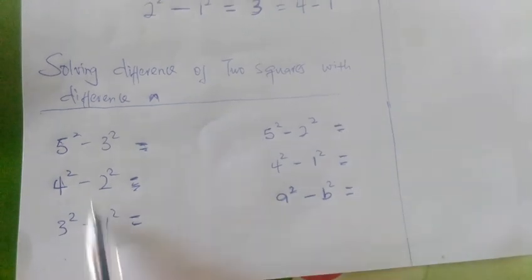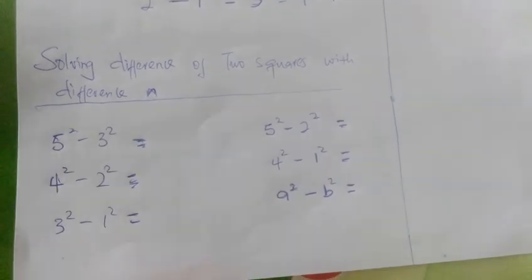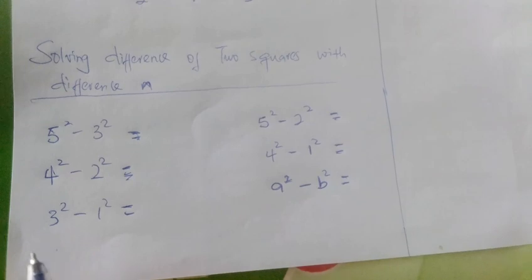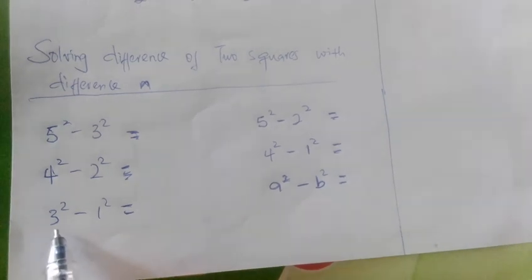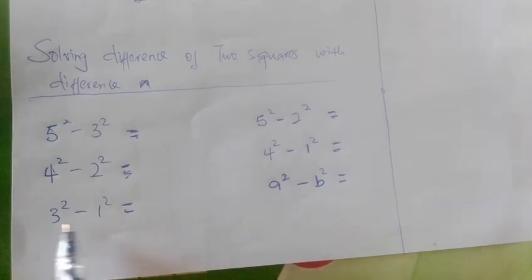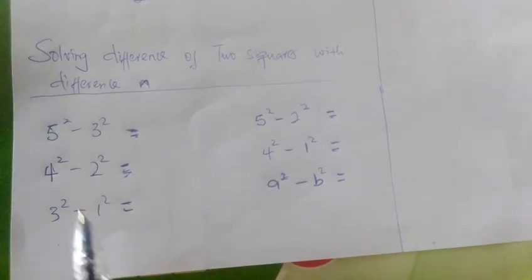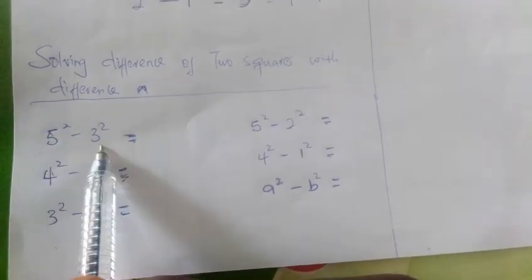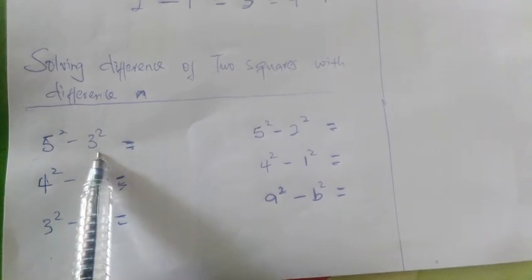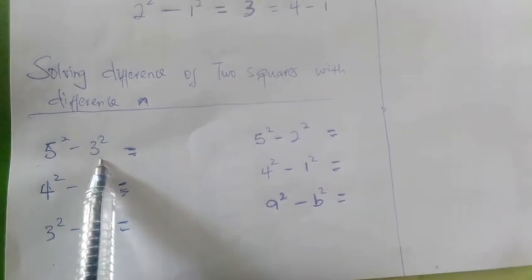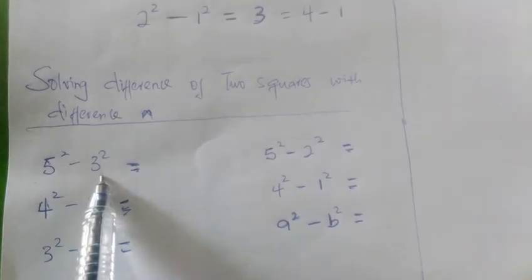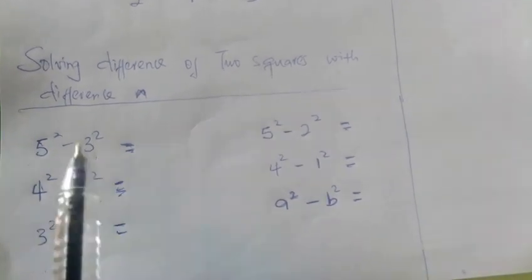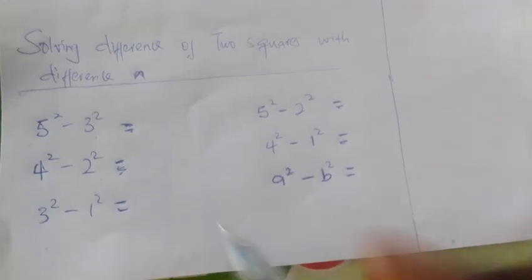Looking at this part of the question, we have the difference of 3 and 1 as 2, 4 and 2 as 2, and 5 and 3 as 2. Our last class looked at the difference as 1. In this class, we have seen the difference as 2.